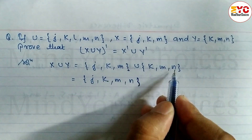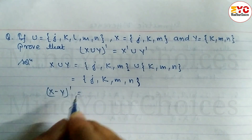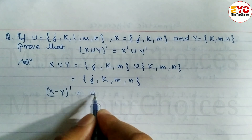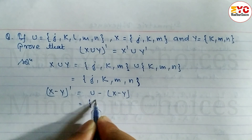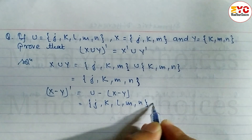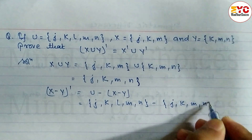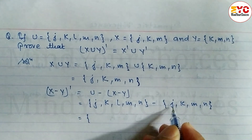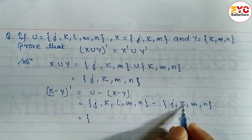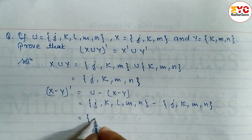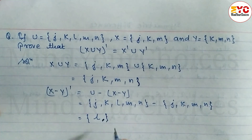So X union Y equals {J, K, M, N}. Now to find the complement of X union Y, we subtract from the universal set: U minus (X union Y) equals {J, K, L, M, N} minus {J, K, M, N}. J cancels, K cancels, L is not in X union Y so we write L, M cancels, N cancels. So the complement of X union Y is equal to {L}.